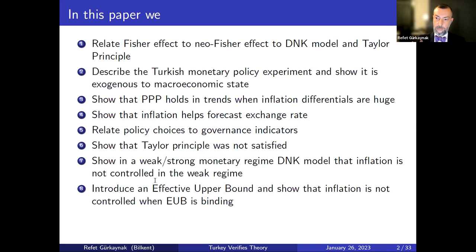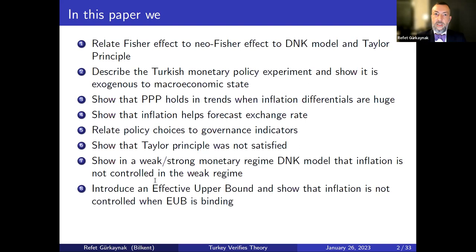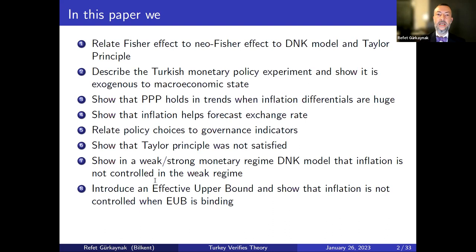So we introduce — sadly in the Turkish context — the idea of the effective upper bound. If you're familiar with the effective lower bound literature, this works in a very similar vein. The effective lower bound is you can't lower the nominal rate below a certain threshold because people will just hold cash — that's a participation constraint. The effective upper bound is a political constraint: there is a political authority above you that says you cannot raise interest rates above some threshold, whether it's three, six, or eight percent.